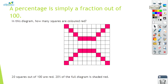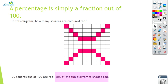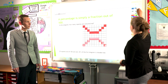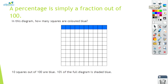The first thing that children would be taught is that percent means out of a hundred. Teachers might use an example like this to show the children. In this diagram they'll be asked how many squares are coloured red — there are twenty squares out of a hundred that are red, therefore twenty percent of the full diagram is shaded red. Another example is this diagram where there are ten of a hundred squares coloured blue, so ten percent are blue.